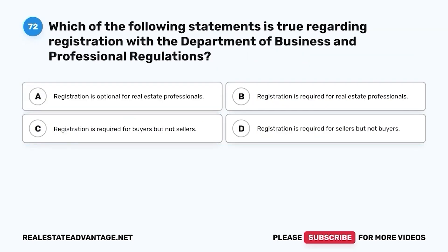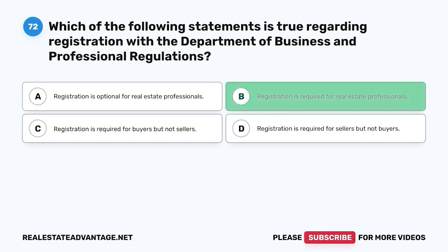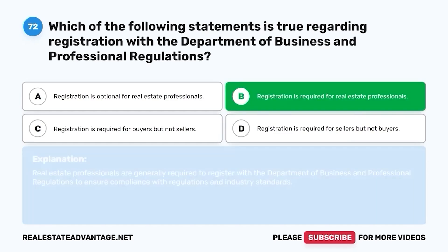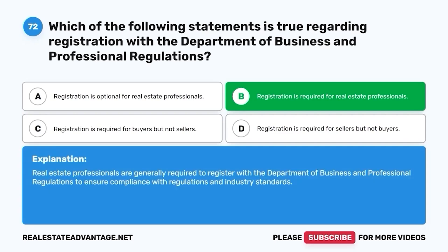Question 72. Which of the following statements is true regarding registration with the Department of Business and Professional Regulations? A. Registration is optional for real estate professionals. B. Registration is required for real estate professionals. C. Registration is required for buyers but not sellers. D. Registration is required for sellers but not buyers. The correct answer is B. Real estate professionals are generally required to register with the Department of Business and Professional Regulations to ensure compliance with regulations and industry standards.